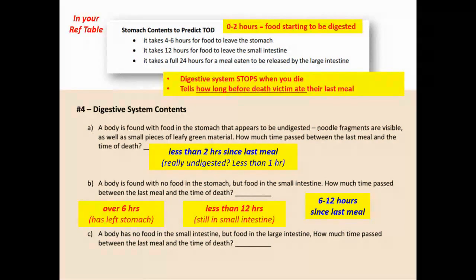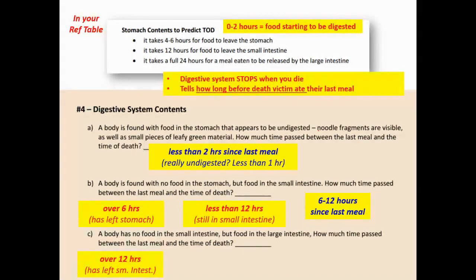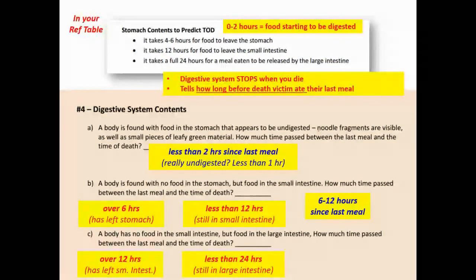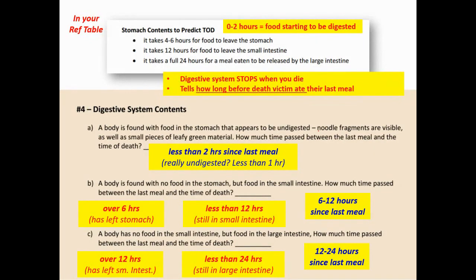Case 4C: the body has no food in the small intestine but food in the large intestine. Food has left the small intestine, so it's been over 12 hours. Food is still in the large intestine, so it's been less than 24 hours. Therefore, 12 to 24 hours passed between the last meal and the time of death.